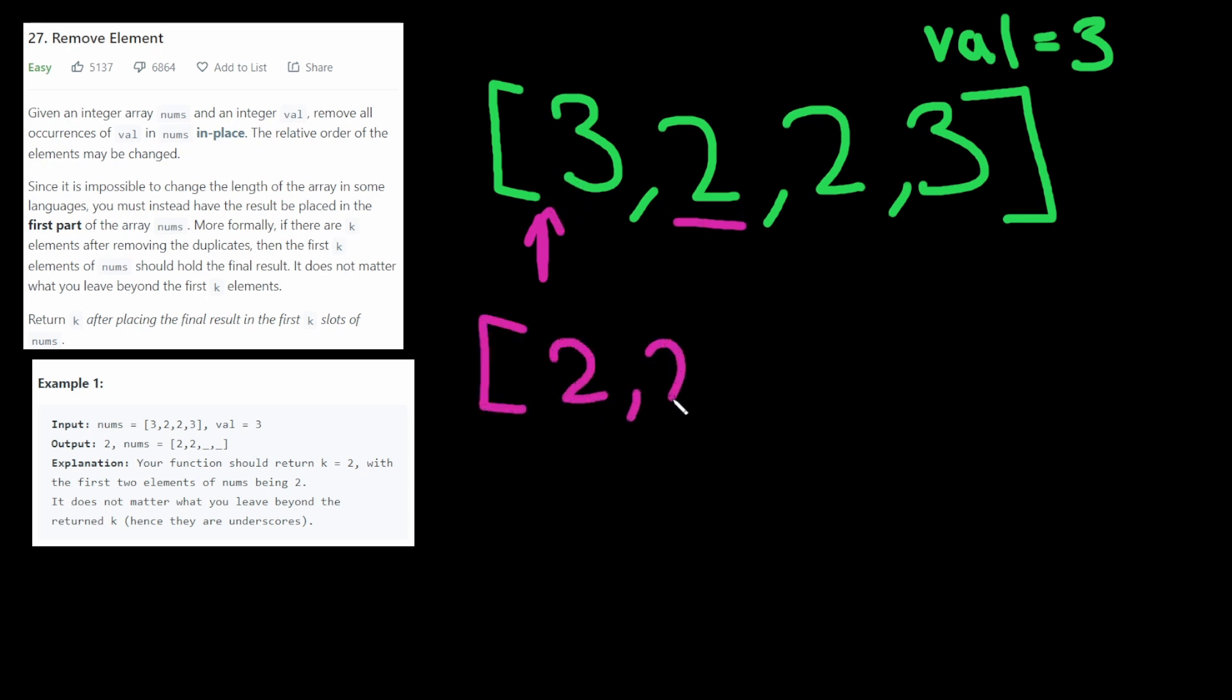So now the array is going to look like this. And now the insert index is one. And now we're on this two here. This two does not match val, therefore we insert it and increment insert index.